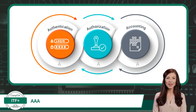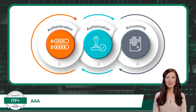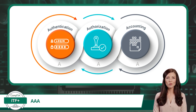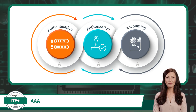Together, the three pillars of authentication, authorization, and accounting make up the AAA security principle in the realm of information technology. Authentication verifies a user's identity, ensuring that individuals are genuinely who they claim to be. Once their identity is confirmed, authorization steps in to determine what actions or resources the user is permitted to access, ensuring that they only interact with what they're allowed to. Lastly, accounting meticulously tracks and records all user activities, providing a comprehensive log that can be reviewed for security, compliance, or audit purposes. Collectively, these components not only bolster security, but also streamline user management and oversight in IT systems.